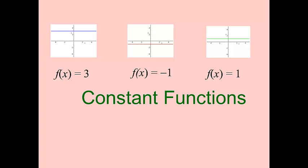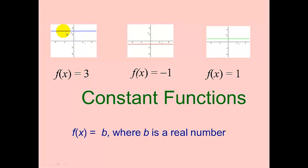Let's look at a constant function. This is a linear function, but the special case where the slope equals zero. So that x term is not there, and we just have f(x) = 3, or negative one, or one — it's when f(x) equals b, where b is any real number. The domain is still all real numbers, but the range for this first one is just three, and for another it's negative one. These functions do not have any zeros, because there are no x-intercepts.